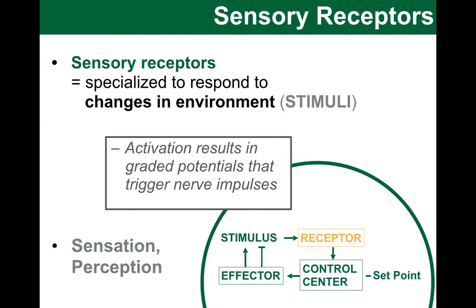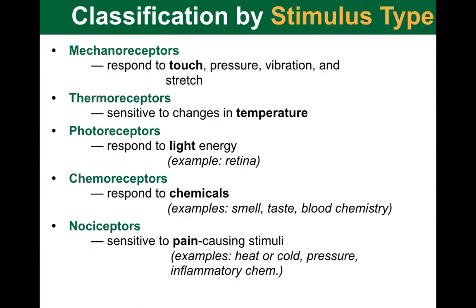Let's continue our discussion, focusing now on the receptors again. We can classify these receptors in three ways: based on the type of stimulus, based on the body location, and based on the structural complexity. We will start with the classification by the stimulus type, and let's go through these five types of receptors.